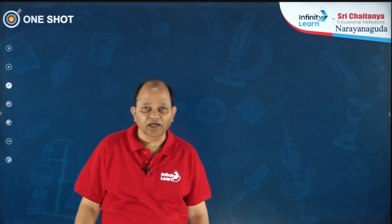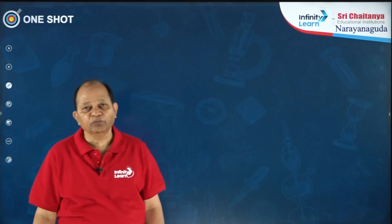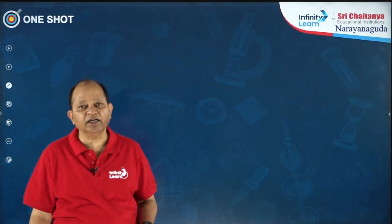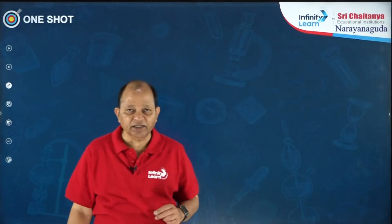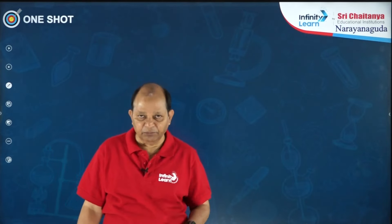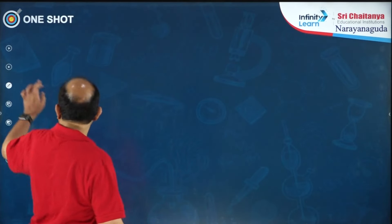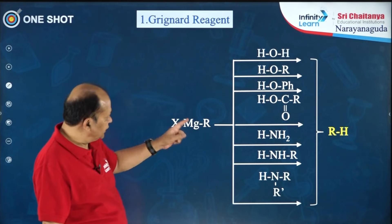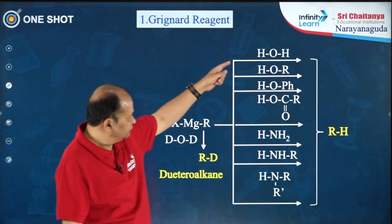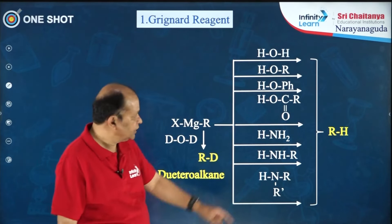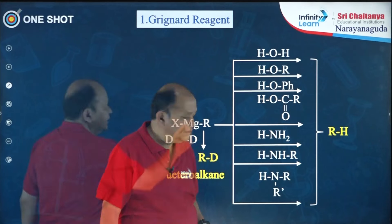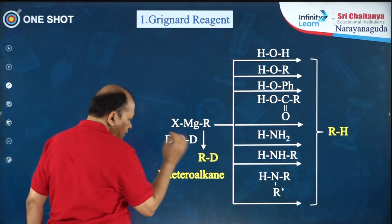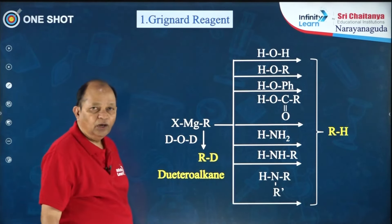Hi students. Now I am going to explain you briefly about some of the important reagents that are used in organic chemistry. To start with, the first one is Grignard reagent. Here are the reactions of Grignard reagent with different compounds. The product is alkane; instead of water, if you use deuterium oxide, the product is deuteroalkane.